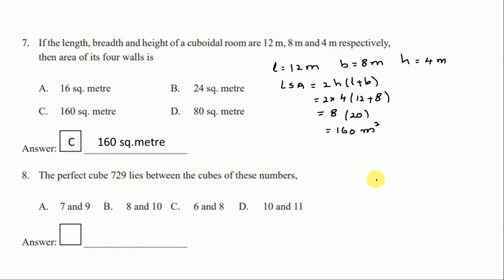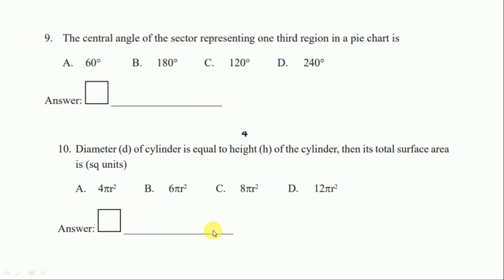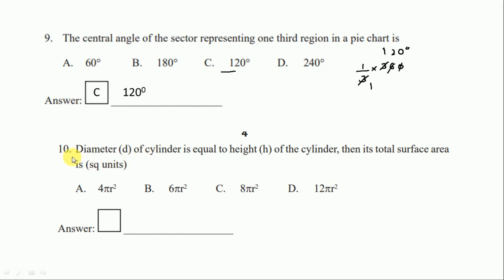Question 8: the perfect cube 729 lies between the cubes of which numbers? 729 is the cube of 9, and it lies between 8 cubed and 10 cubed, so the answer is option B, 8 and 10. Question 9: the central angle of the sector representing one-third region in a pie chart. One-third of 360 degrees is 120 degrees, so the right option is option C, 120 degrees.